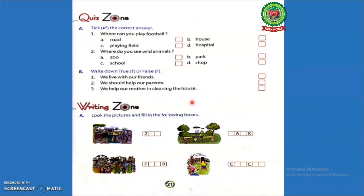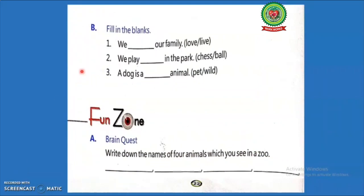Now come to the writing zone, exercise A. Look at the pictures and fill in the following boxes. Here pictures are given to you. You will identify the given place and write the name of that place and complete the word. Students, open your book at page 22.